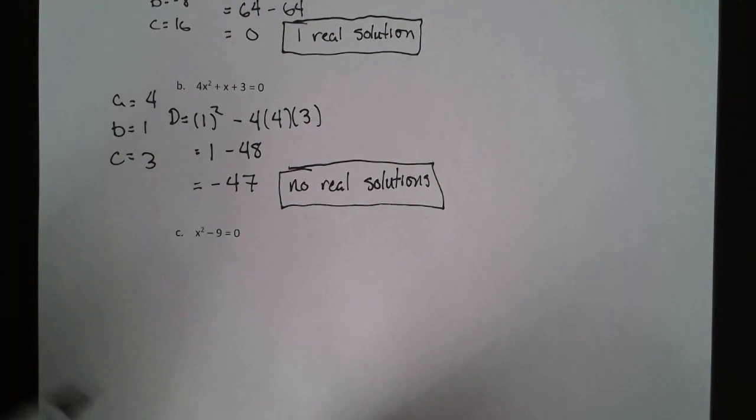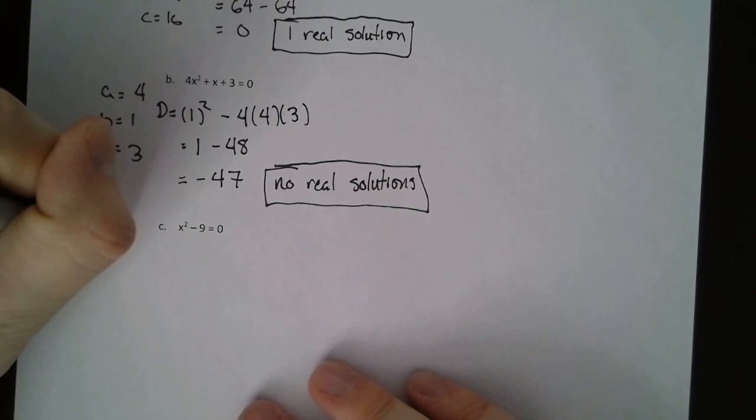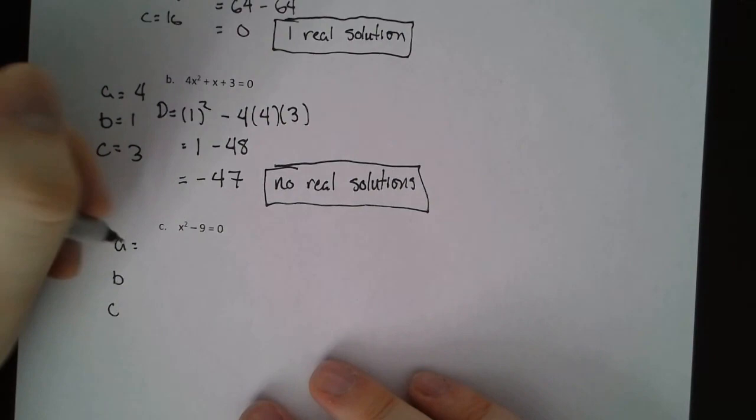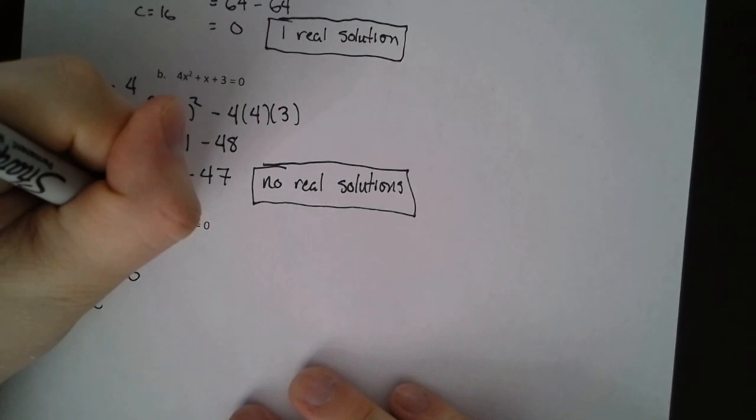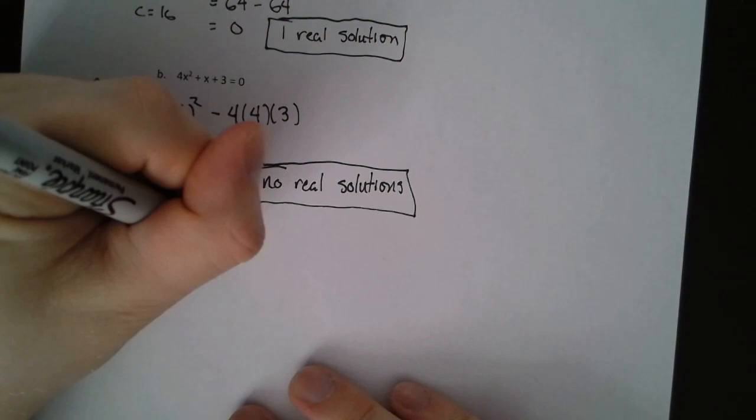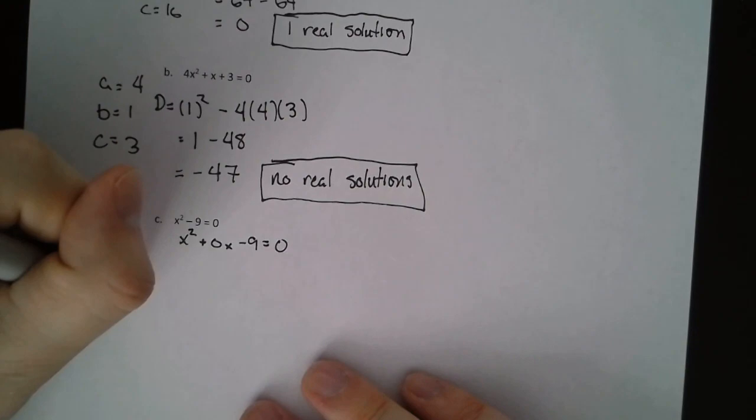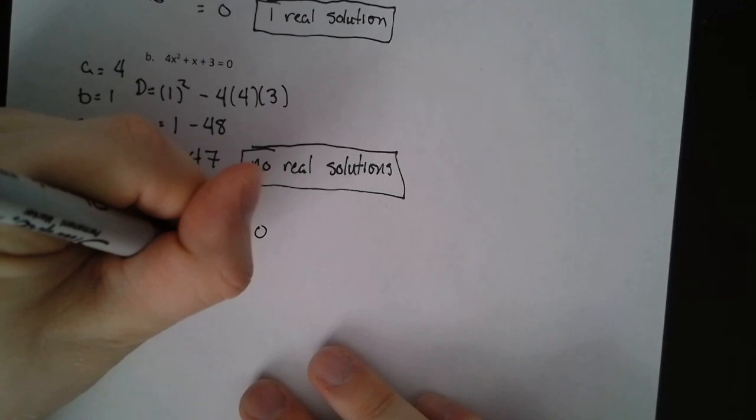Let's finally look at this last example. A is 1. B in this case would be 0. If I were to write all of this out in standard form, we would have a plus 0x here, minus 9. So we don't have any single x terms. And then C is negative 9.